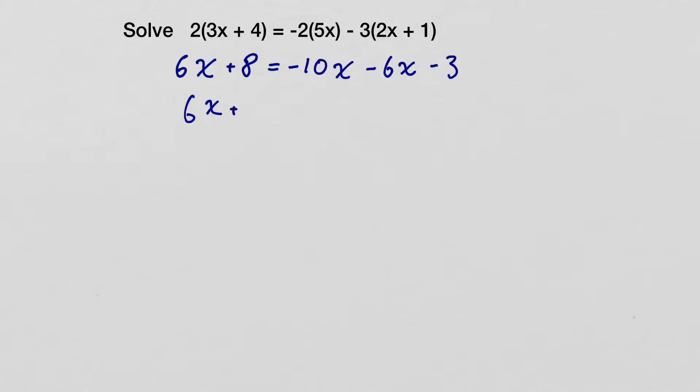So we'll leave our left side of the equation the same. And we have a negative 10x plus a negative 6x. Well, 10 plus 6 is 16. And since they're both negative, that gives us negative 16x. And our negative 3 stays the same.